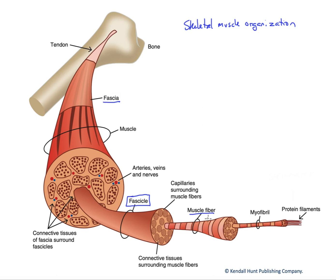If we look inside the muscle fiber — inside the muscle cell itself — we'll see even further bundles called myofibrils. The myofibrils are bundles of protein filaments. These protein filaments form repeating units that generate contractile force, and those repeating units are called sarcomeres.